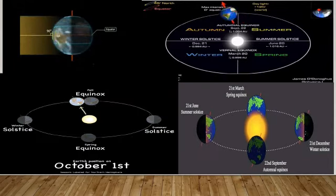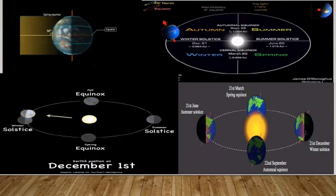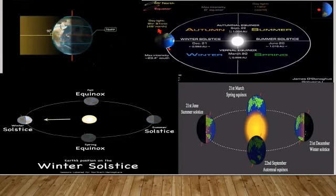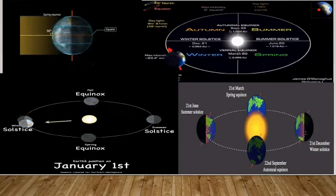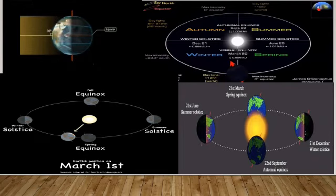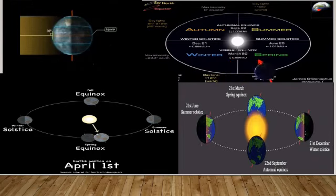The spring equinox on 21 March. It is spring in the northern hemisphere and autumn in the southern hemisphere.